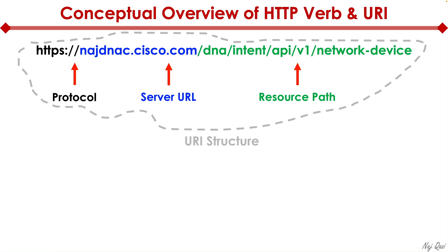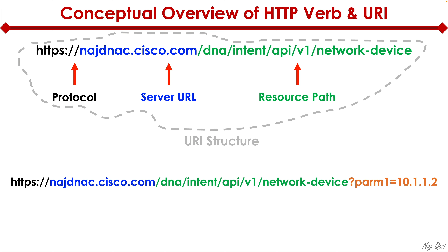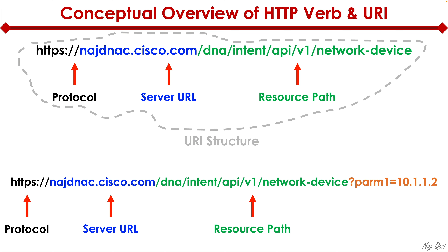The entire structure I'm showing you here is called a URI structure — this entire thing is a URI. To take it a step further, we have the protocol, the server URL, and the resource path. But in addition to that, we have a certain parameter — it could be a set of parameters or just a single parameter that we're passing through the URI against the API — in order for us to either read or write something, and our SDN controller is able to understand the request and get us the information we're looking for.